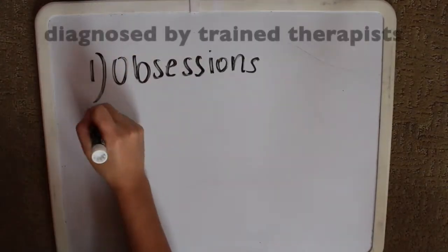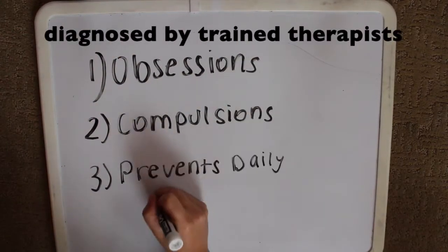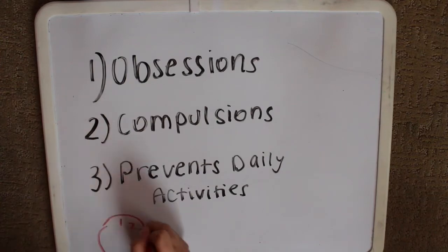Now diagnosing OCD is based on three main criteria. First, there's obsessions; second, there's compulsive behaviors; and third, the most critical piece is that these obsessions and compulsions take up a lot of time and get in the way of important activities.